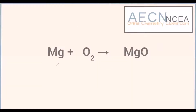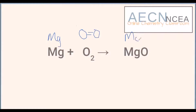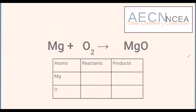Here we have magnesium metal reacting with oxygen to form the ionic compound magnesium oxide. This is probably one that you've done in class before, where you take the magnesium strip, put it in the Bunsen burner, and it makes a really bright white light. This is the unbalanced equation for it. I find the easiest way to balance equations, especially when they get a little bit more difficult, is to use a table.